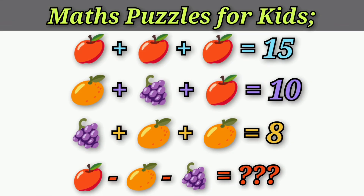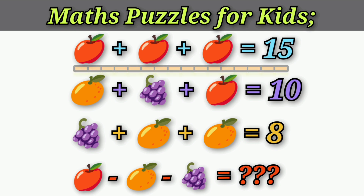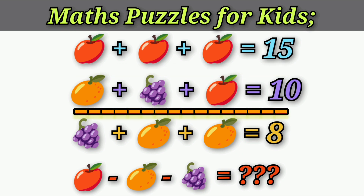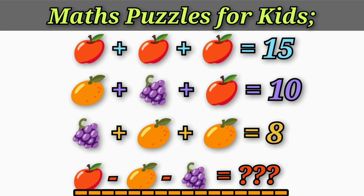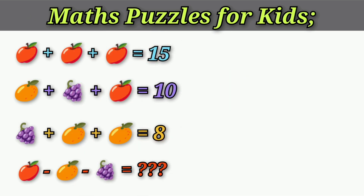Maths puzzles for kids — easy method to solve this problem. First: apple plus apple plus apple equals 15. Second: orange plus grapes plus apple equals 10. Third: grapes plus orange plus orange equals 8. Fourth: solve apple minus orange minus grapes equals what.